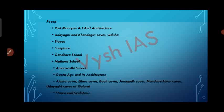During the Post-Maurian Period, we had three prominent sculpture schools: Gandhara School, Mathura School and Amaravati School. We also discussed the Gupta Age and its architecture, Stupas and Sculpture during the Gupta Age, and Ajanta Cave, Ellora Cave, Baag Cave, Junagadh Cave, Mandapeshwar Cave and Udayagiri Cave of Gujarat.